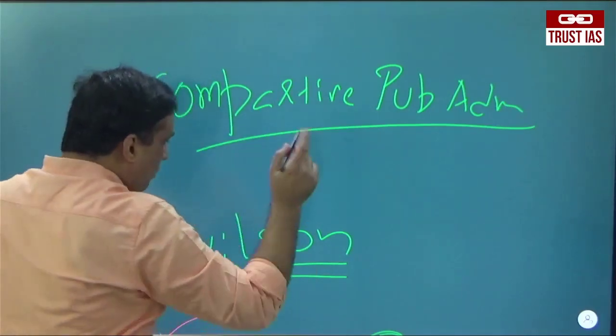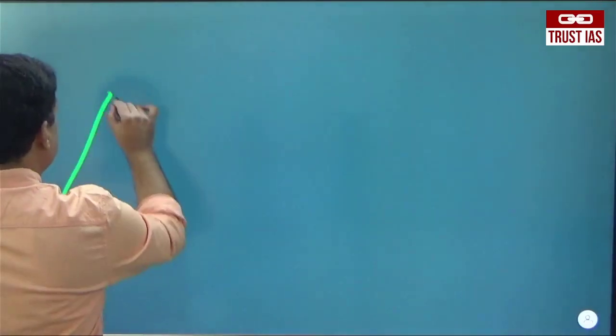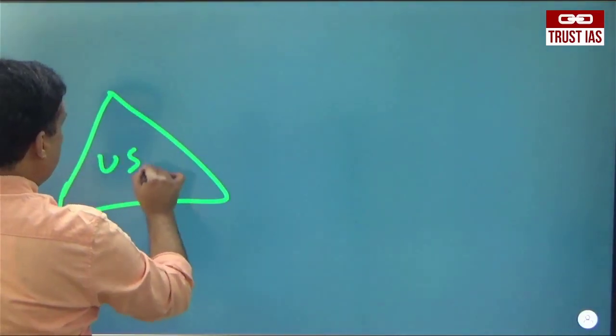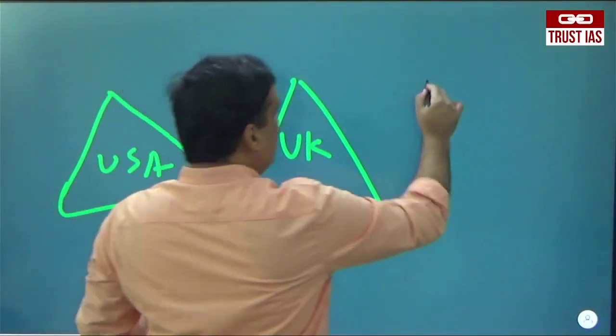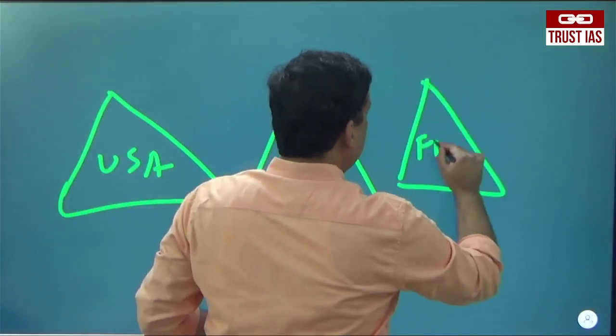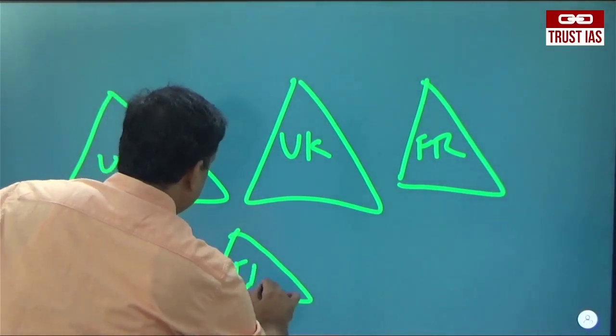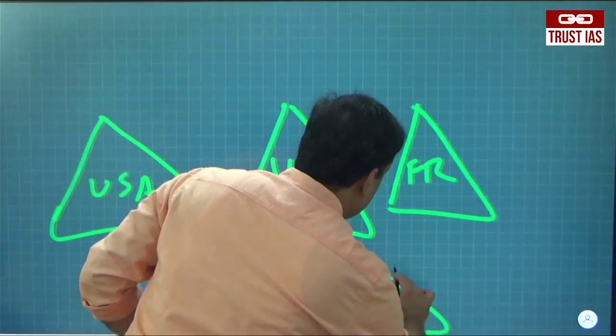See, the whole purpose is to understand that if this is the administration of America, if this is the administration of UK, if this is the administration of France, and this is of India, and this is of China.